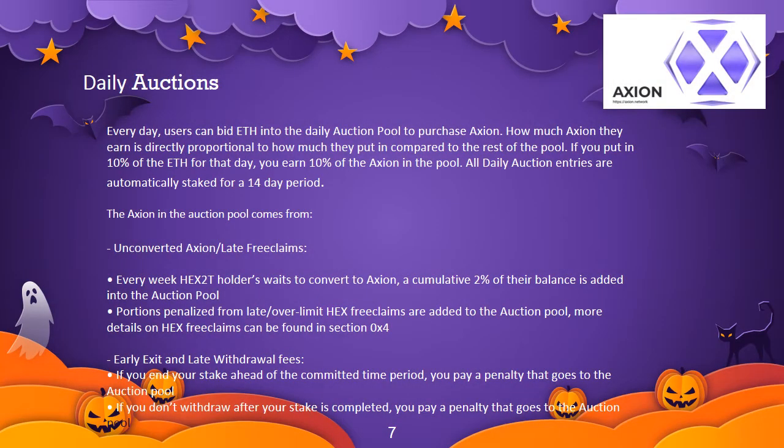The daily auction — putting tokens and value into your pocket. To get AXN, it needs to be claimed by HEX2T holders. The longer they wait to claim, the more penalties they face — about 2% of their total per week. This 2% is added into a daily auction pool where people can bid using ETH on the AXN tokens within it. If you bid 10% of the ETH on that day, you get 10% of the pool rewards. 80% of the ETH paid in the auction is then used to hyperdrive both the AXN token and the stakers' earnings. The ETH is used to purchase the tokens, boosting the token price, and then those tokens are distributed to stakers, creating a very strong positive feedback loop.